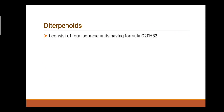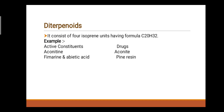Second class: Diterpenoids. They consist of four isoprene units having formula C20H32. Examples — first active constituent: Aconitine, drugs: aconite. Second active constituent: Phytomurin and Abiotic acid, drugs: pine resin.